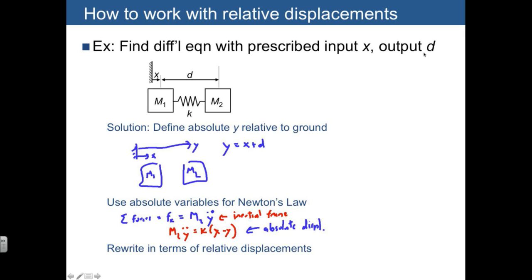So all we need to do then is to get rid of y by substituting in x plus d. So once we do that, we have m2 times x plus d, both double dot, is equal to k times x minus quantity x plus d.